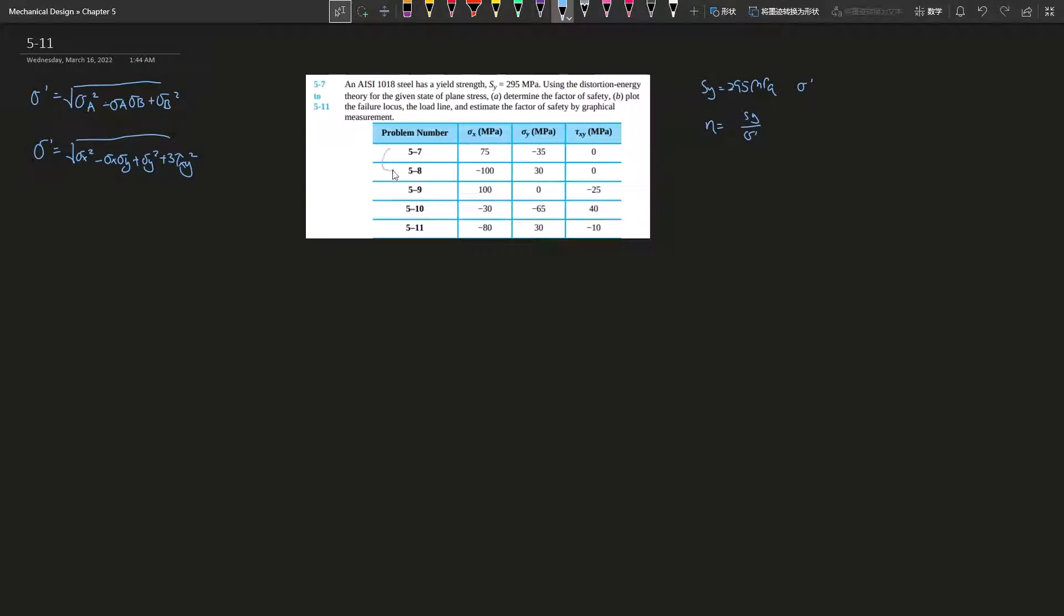For example, 5-7 or 5-8, yes, you can just straight up use this equation because it's already in principal stress—the shear stress is zero. But for 5-11 we cannot; we have to use the bottom equation.